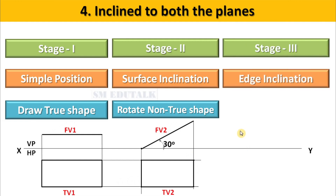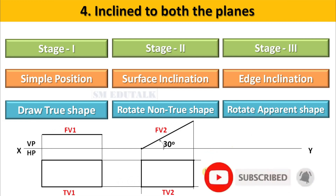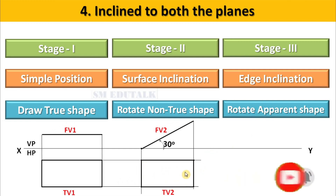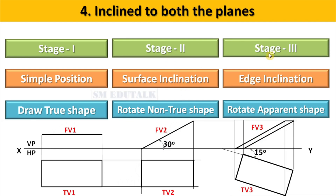Stage 3 represents the edge inclination of the object. Here, the view which represents an apparent shape in stage 2 should be rotated and drawn in stage 3. In this example, top view has got the apparent shape. So it is rotated and drawn as top view in stage 3. Then stage 3 top view and stage 2 front view are projected to get the stage 3 front view. Always surface inclination should be done at stage 2 and edge inclination should be done at stage 3.